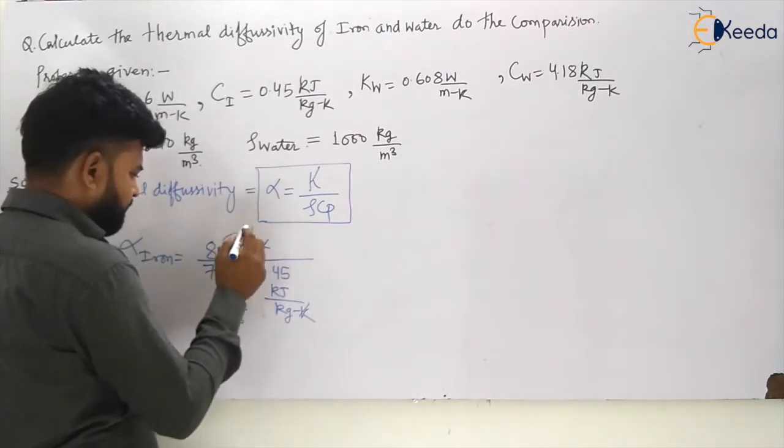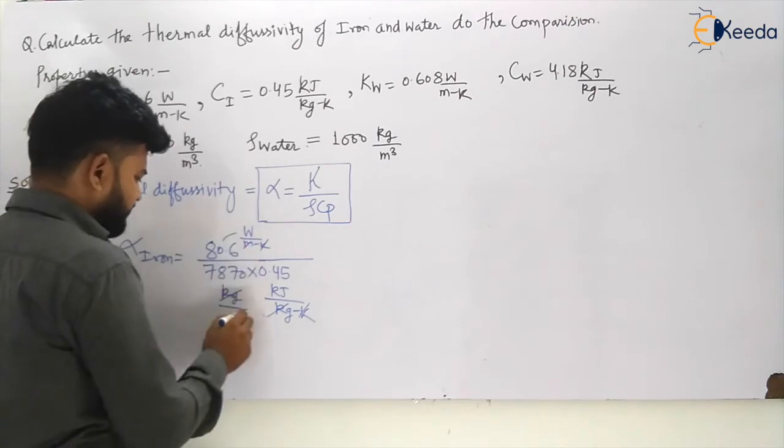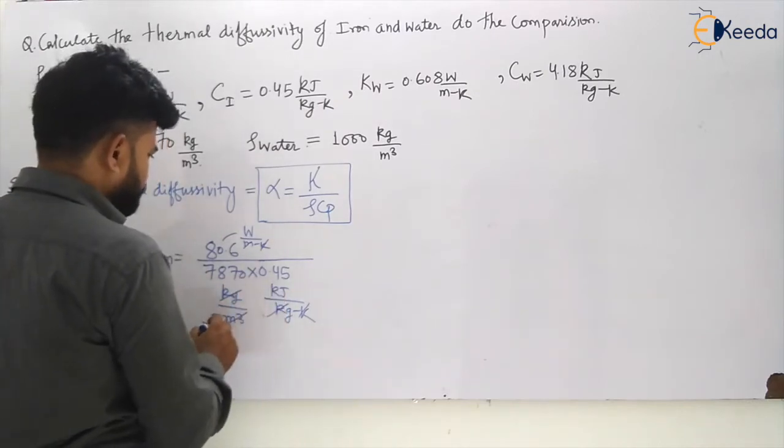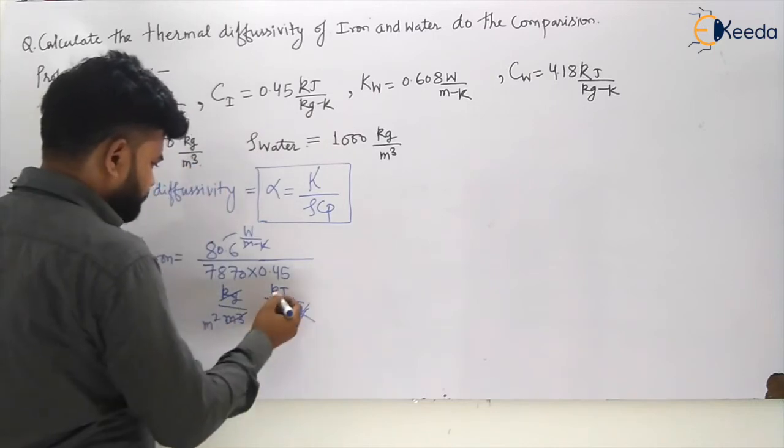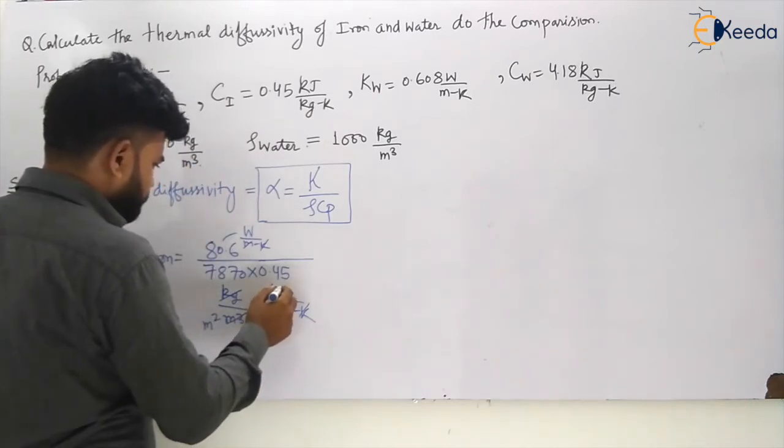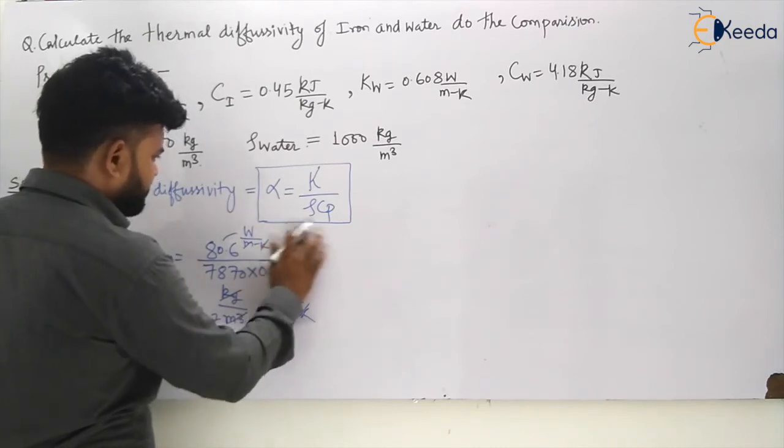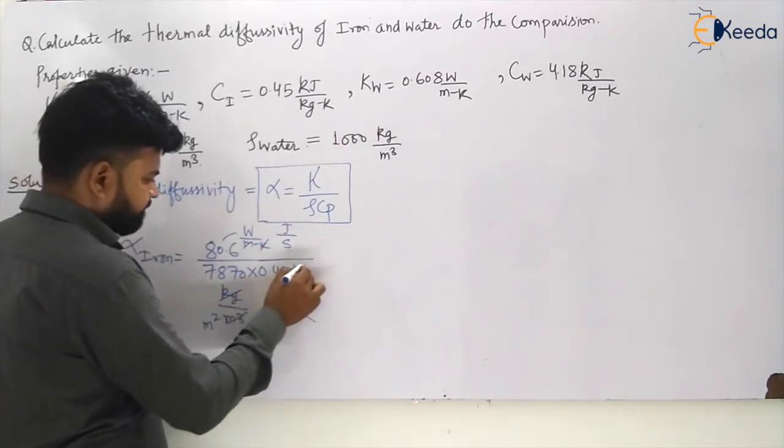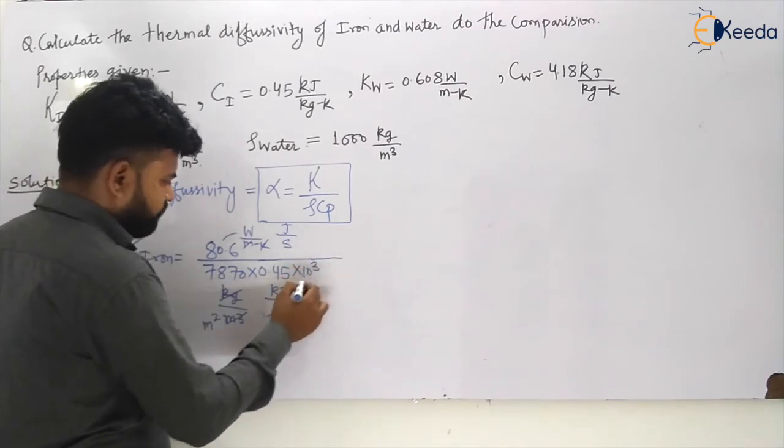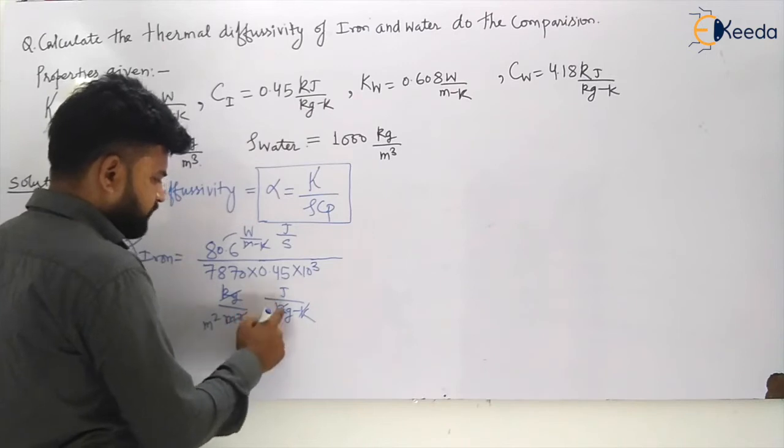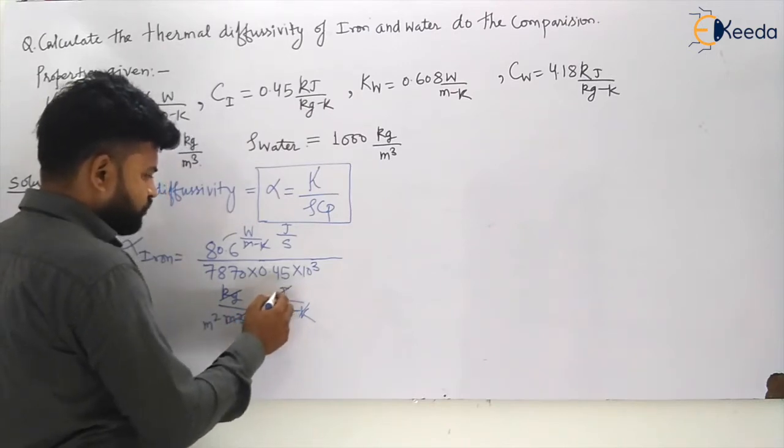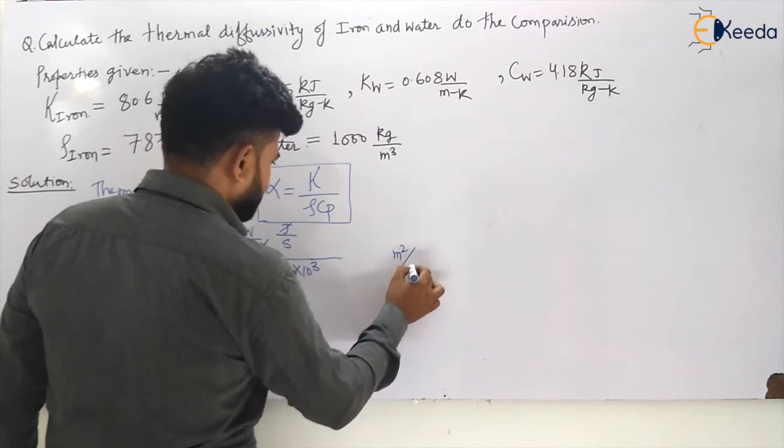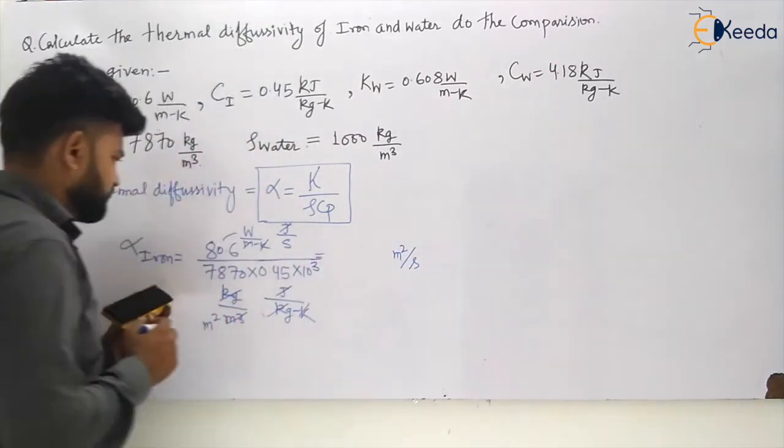Kelvin will go, kg will go, meter and meter cube will go. This will be meter square and kilojoule. And watt, this is watt and this is kilojoule, so it must be in watt. So this will be joule per second. We have to write it in watt times 10 to the power 3. This must be in joule per kg Kelvin. So joule will go, then the remaining unit will be meter square per second.